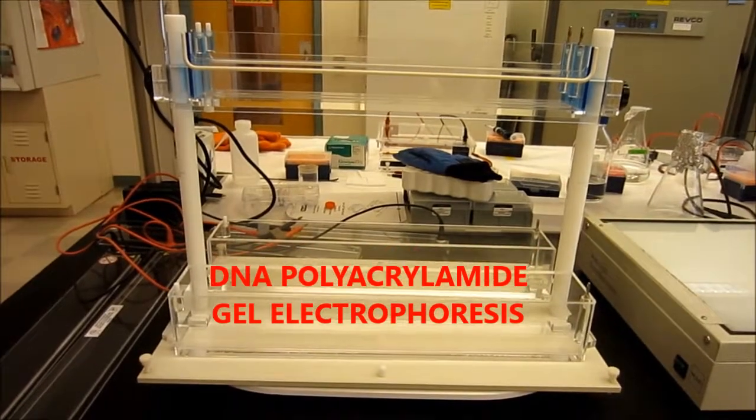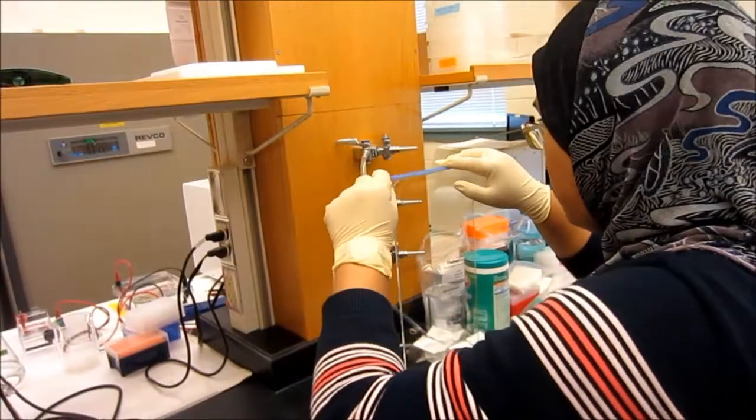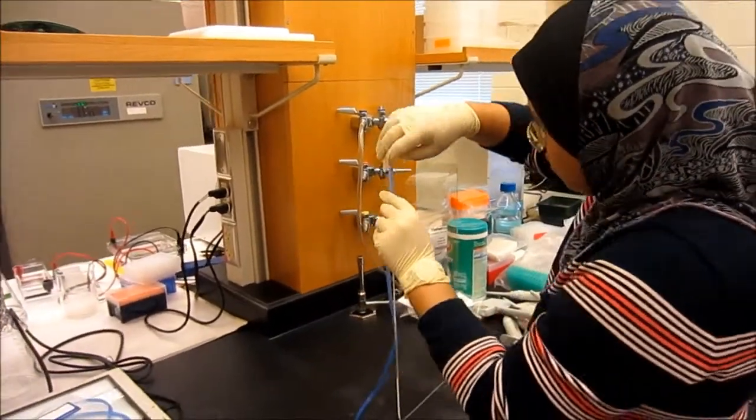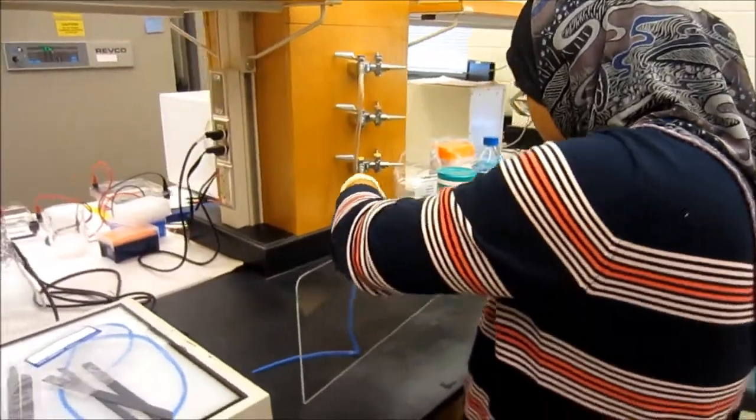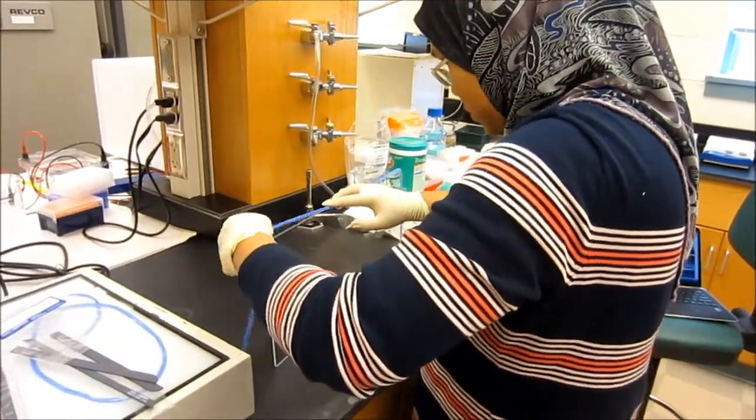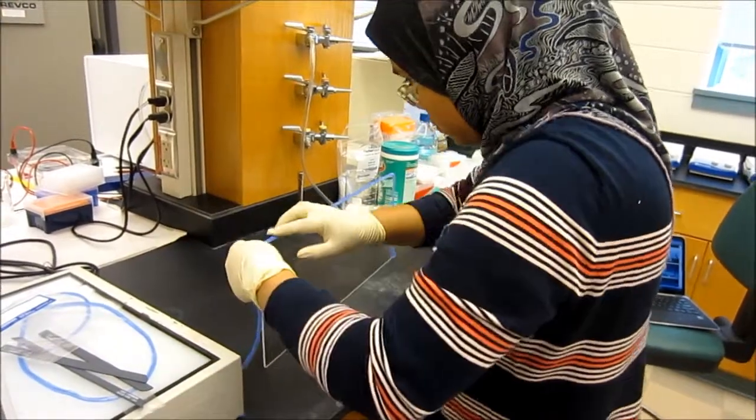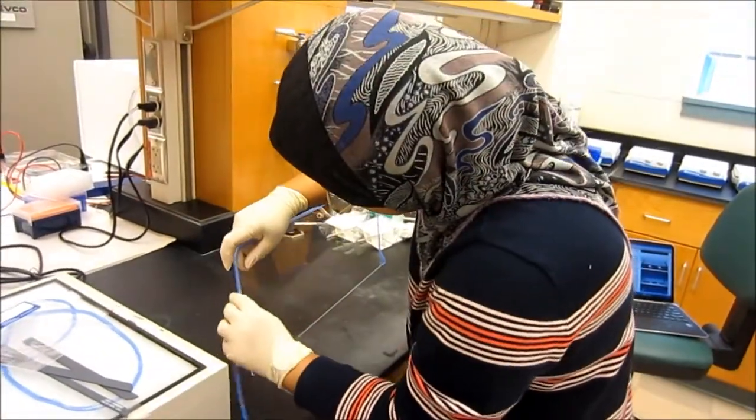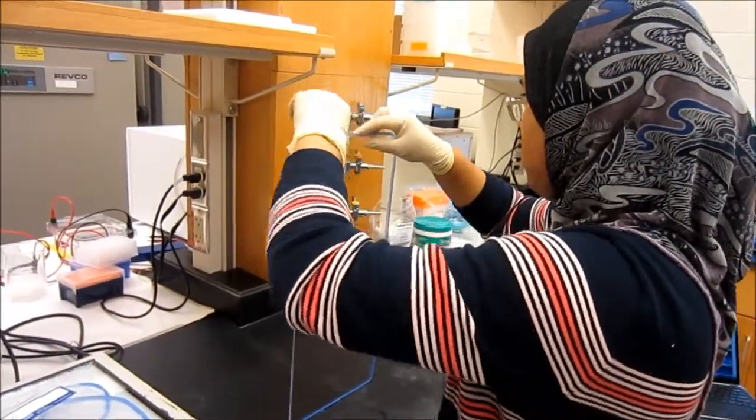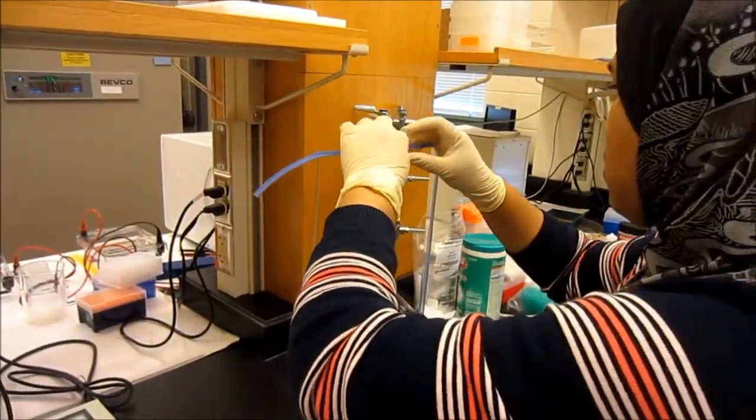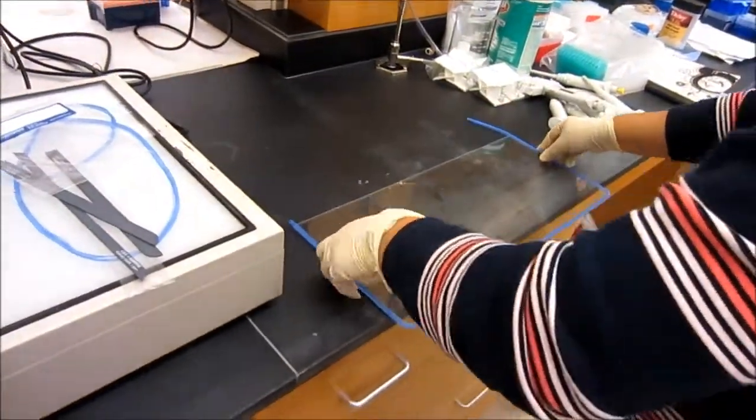DNA polyacrylamide gel electrophoresis. The first step in DNA polyacrylamide gel electrophoresis is assembling the apparatus. Here, you can see a blue tube called Gascade is wrapped around the first glass slide. Gascade is neatly applied on the glass edge. This step is important to ensure that the gel solution that will be poured later will not leak.